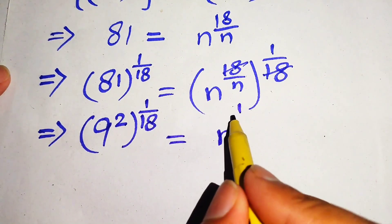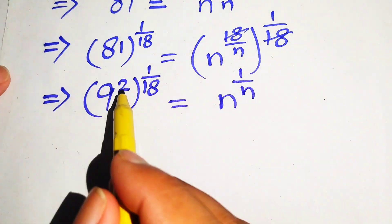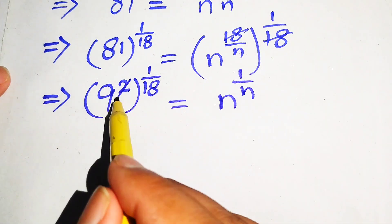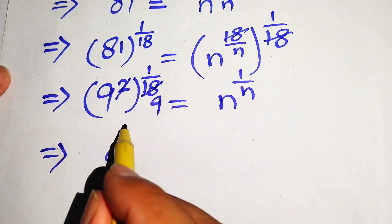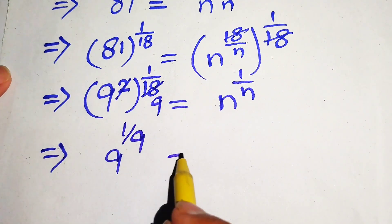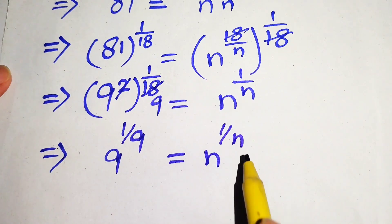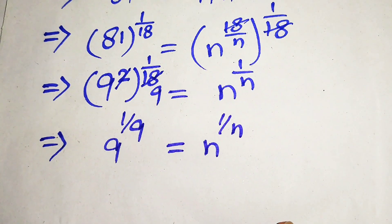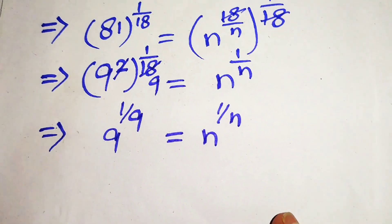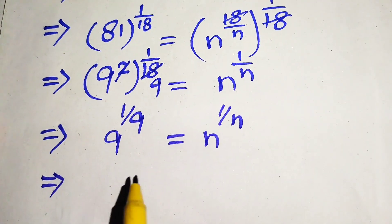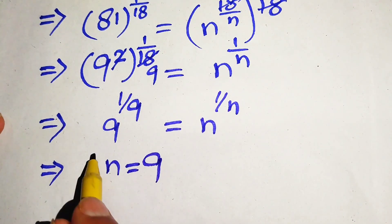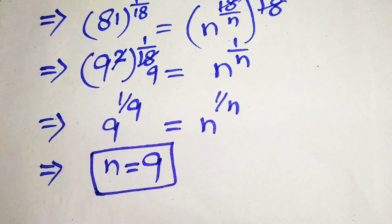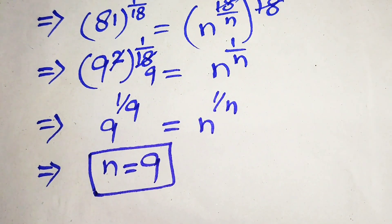On the right hand side we have n to the power of 1 over n. We multiply the exponents on the left: the 2 and 18 simplify by 9, giving us 9 to the power of 1 over 9 equals n to the power of 1 over n. Comparing both sides, we easily get n equals 9. This is the final answer from method 1.